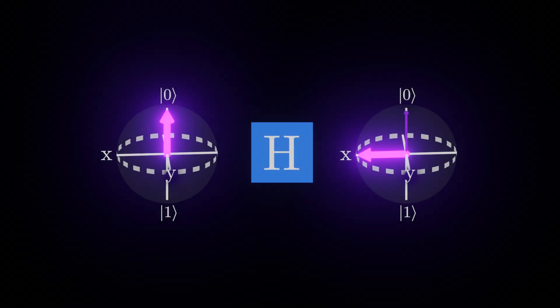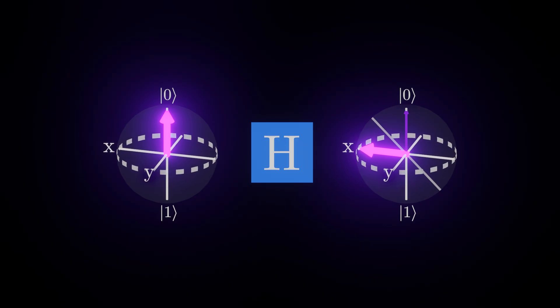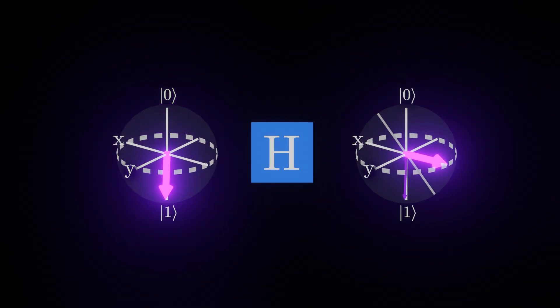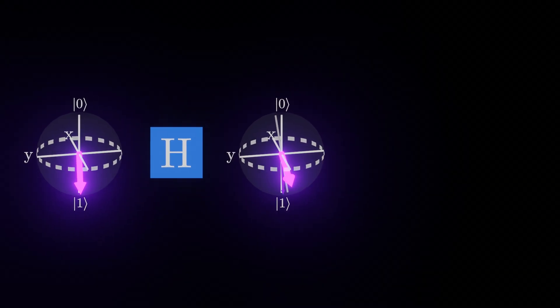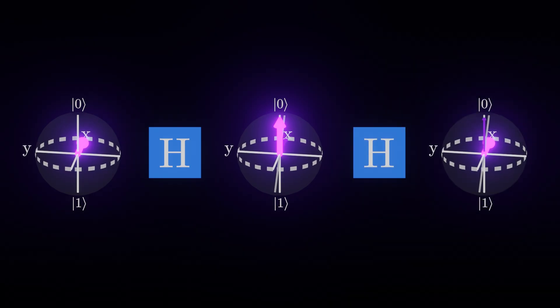Finally, the Hadamard gate functions as a half rotation around this axis, between the X and Z axes. This half rotation gives us an intuition for why applying it twice seems to produce no change.